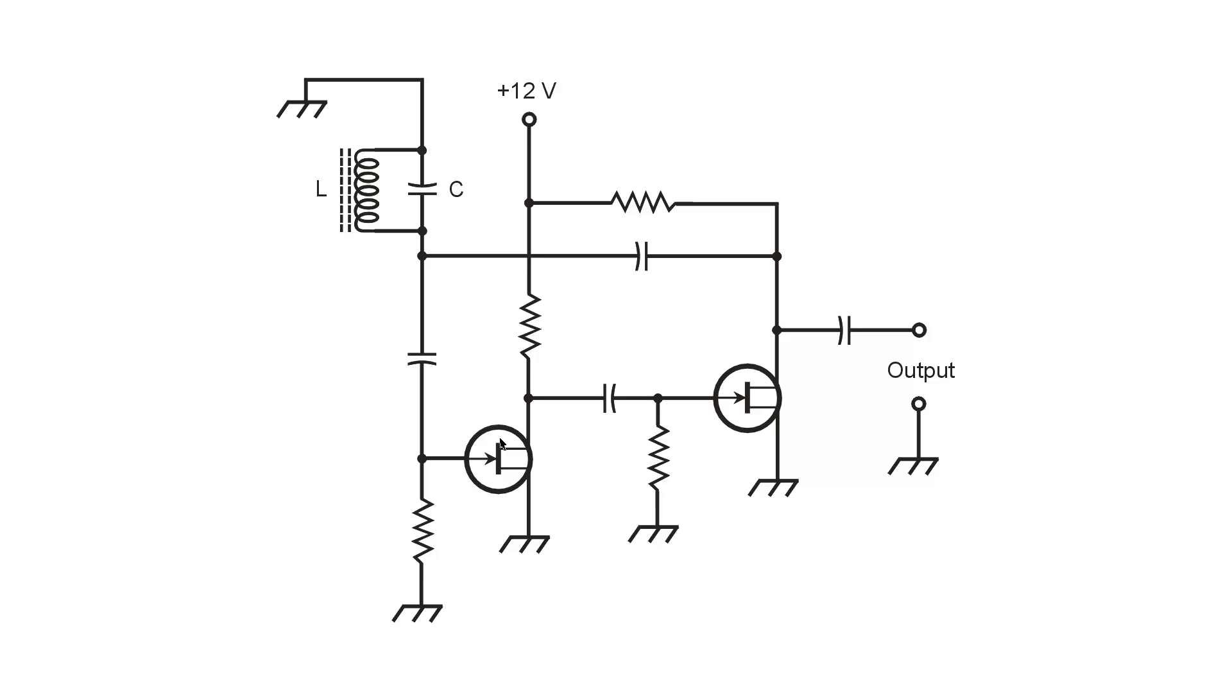These could just as well be P-channel field effect transistors, in which case you would reverse the polarity of the power supply. Or they could be NPN or PNP bipolar transistors, in which case you'd need an extra resistor between the base and the power supply in order to provide class A operation.